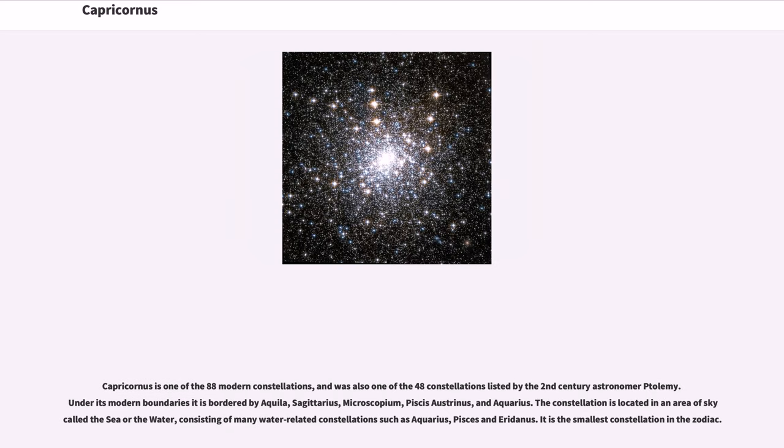Capricornus is one of the 88 modern constellations and was also one of the 48 constellations listed by the 2nd century astronomer Ptolemy. Under its modern boundaries it is bordered by Aquila, Sagittarius, Microscopium, Pisces Austrinus, and Aquarius.